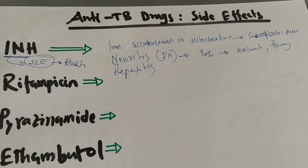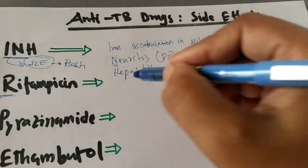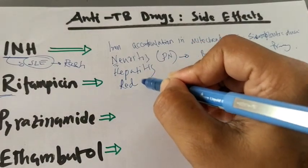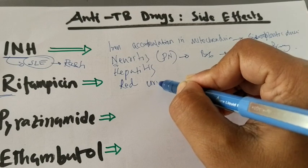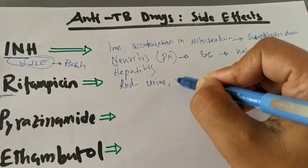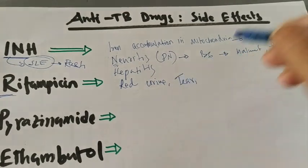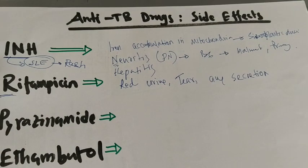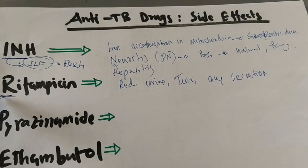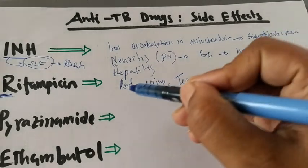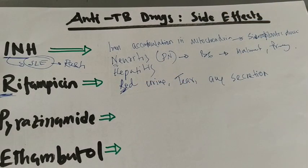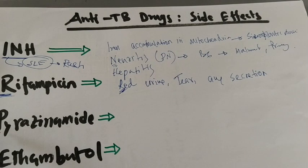Next is Rifampicin. R stands for red — red discoloration of urine and any other secretion. Remember: Rifampicin causes red discoloration of urine and any other bodily secretion.